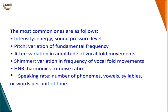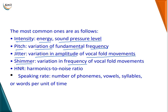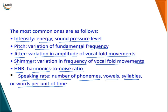The most common audio features are as follows. First is intensity — energy and sound pressure levels. Pitch — variations of fundamental frequency. Jitter — variation in amplitude of vocal fold movements. Shimmer — variation in frequency of vocal fold movements. HNR — harmonic to noise ratio. Speaking rate — the number of phonemes, vowels, syllables, or words per unit of time.